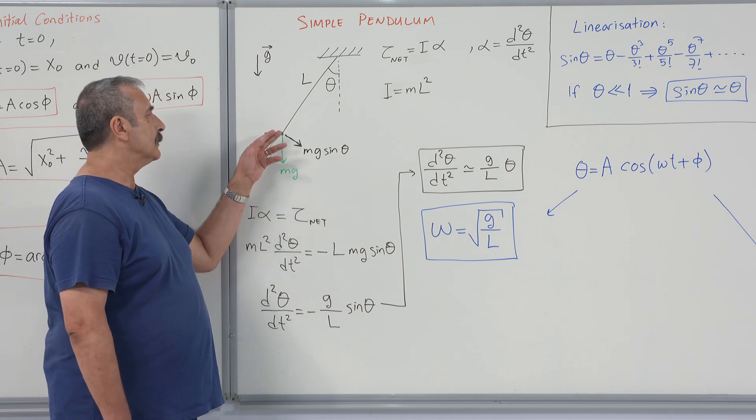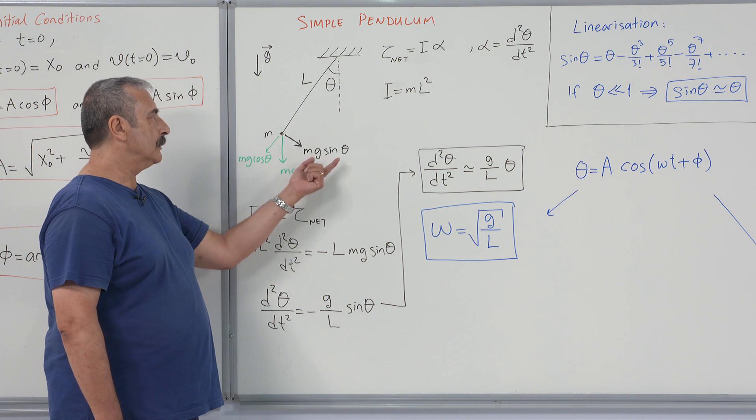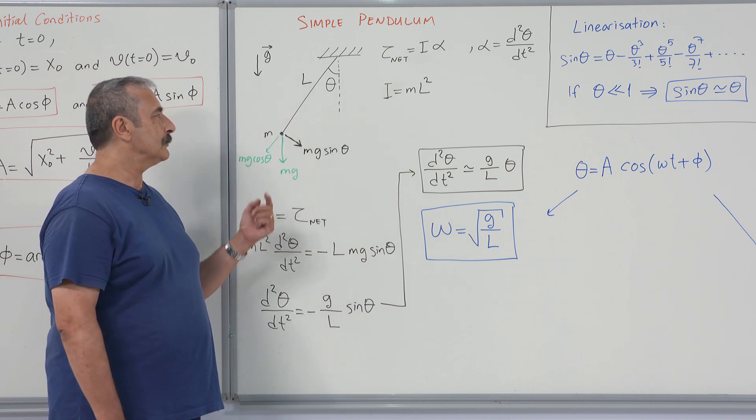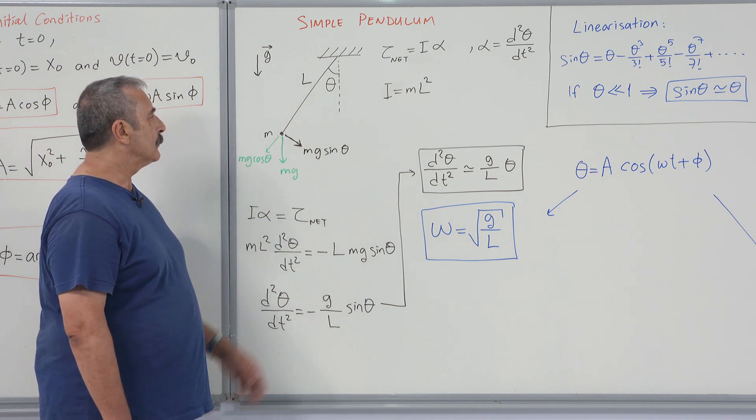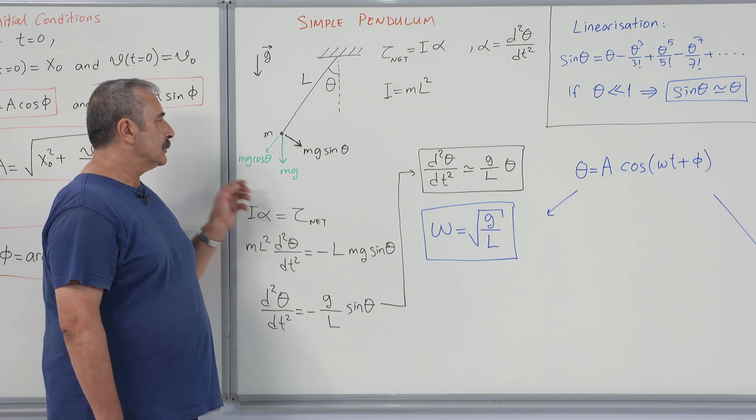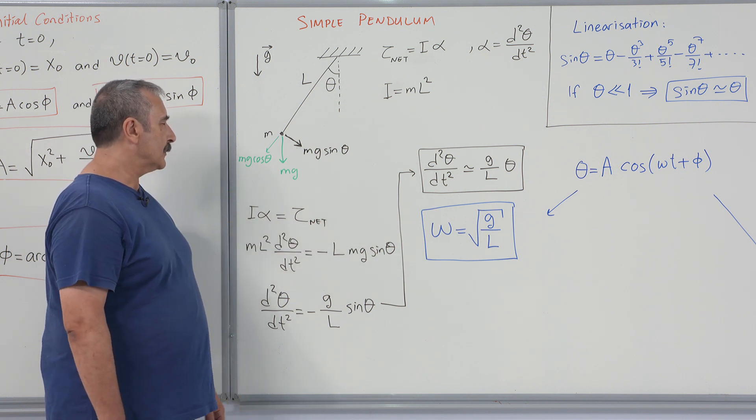It consists of a point mass m and a massless string of length L moves under the effect of gravity, and when the mass is moved away by angle theta from its equilibrium position, vertical position, it swings under the effect of gravity.